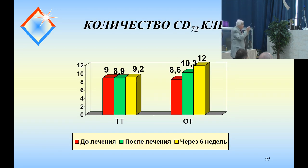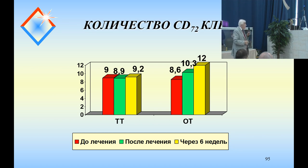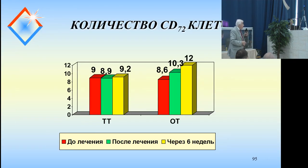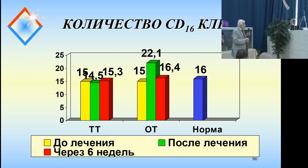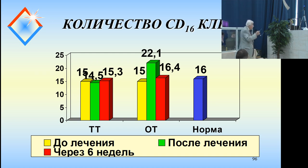Here the yellow bar, as indicated, shows the results at 6 weeks — the distant follow-up results. This is CD72. Next is CD16 — we have the same kind of norm, you see: 16, 16, and 4 after application of ozone therapy at 6 weeks — that is, the long-term results.